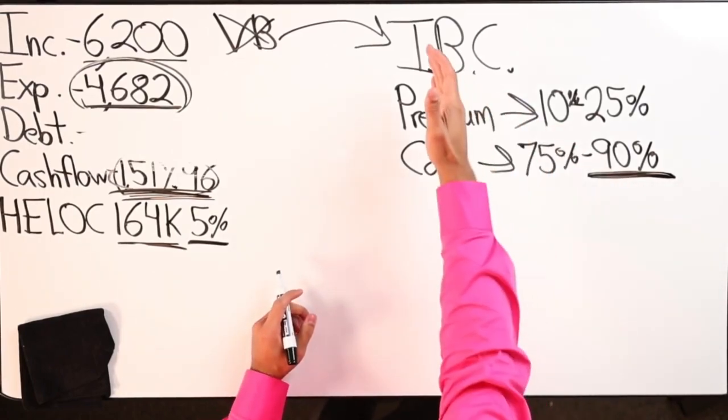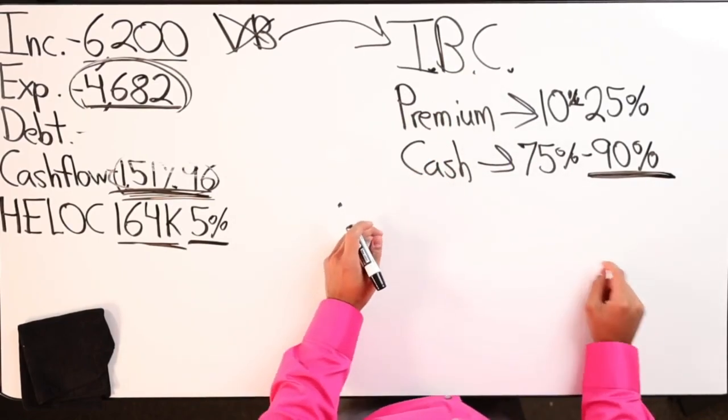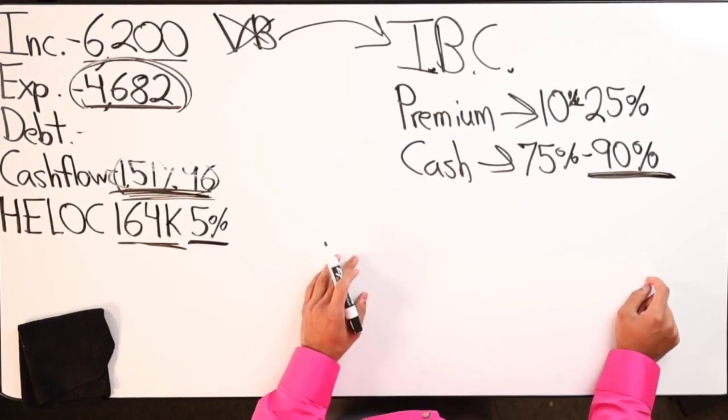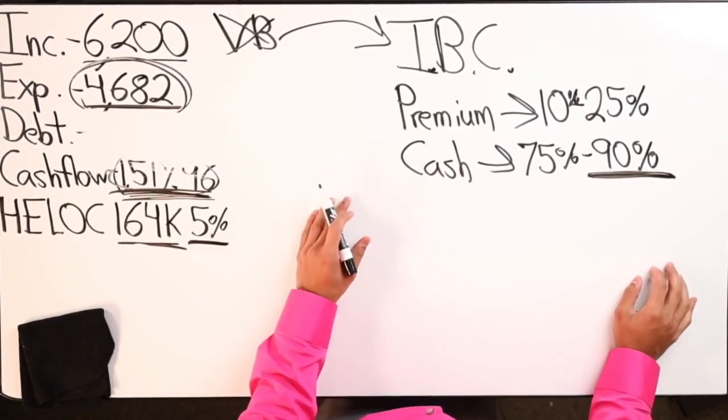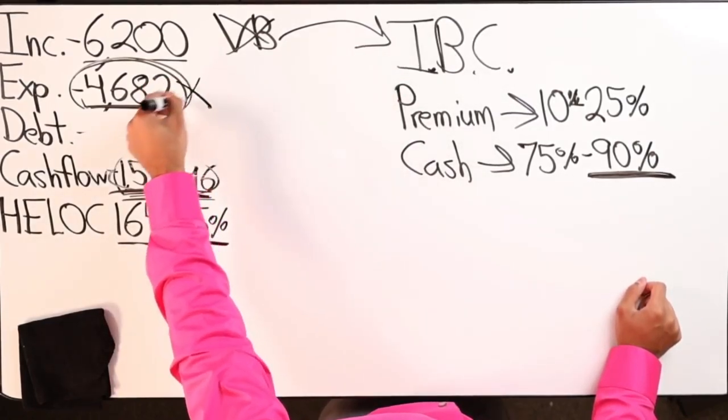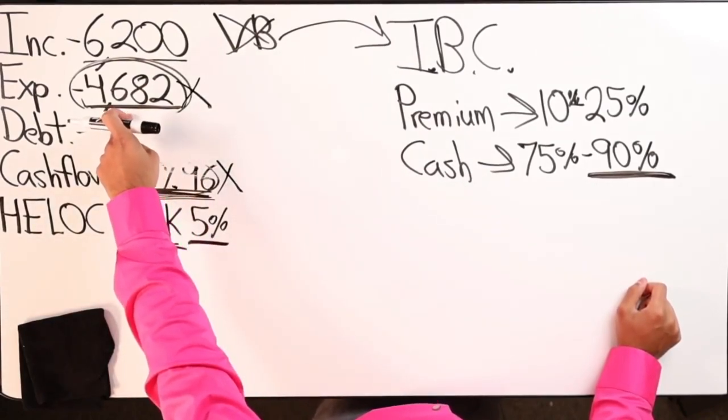What I do typically, if I was going to establish my own private bank or my own family bank, whatever the different terminologies people are using, what I do is I look at your expenses, I look at your cash flow and I see how much bills can I pay annually.